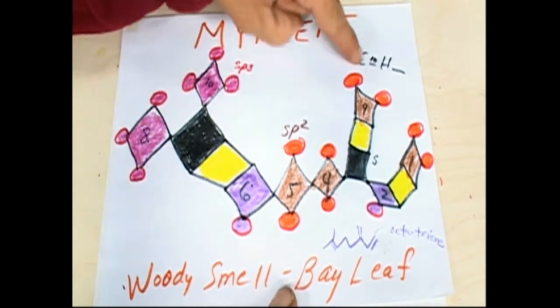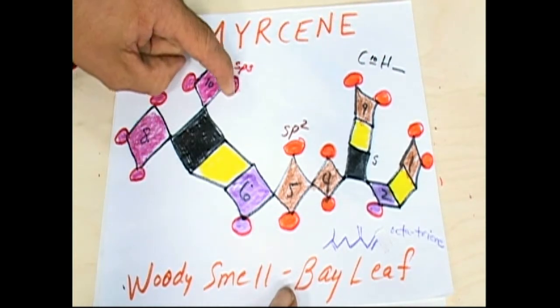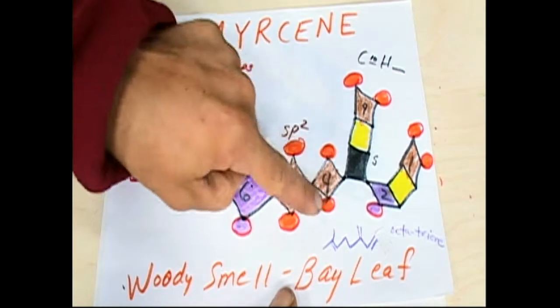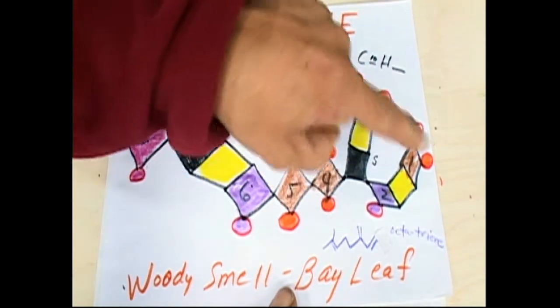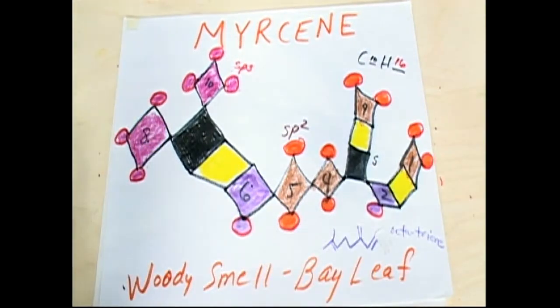So we see there were 10 carbons, now count the hydrogens. 1, 2, 3, 4, 5, 6, 7, 8, 9, 10, 11, 12, 13, 14, 15, 16. Real easy to do. This is college chemistry, kids.